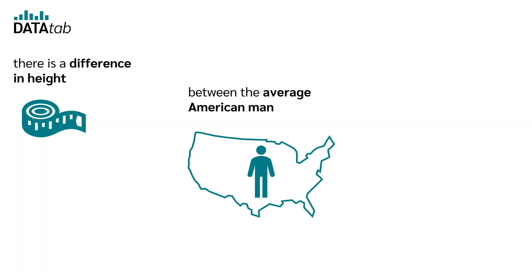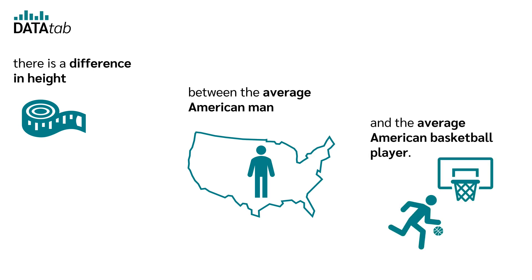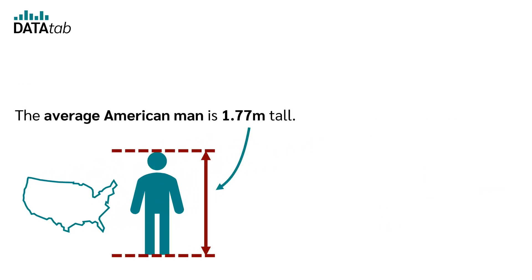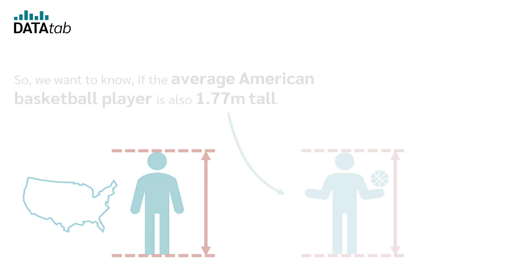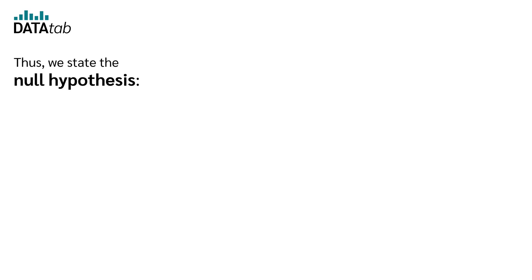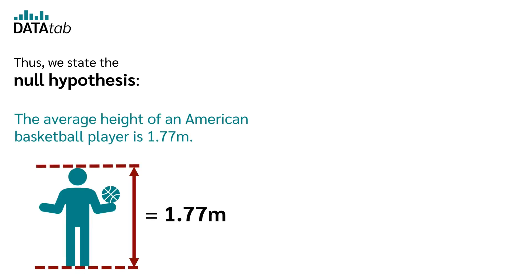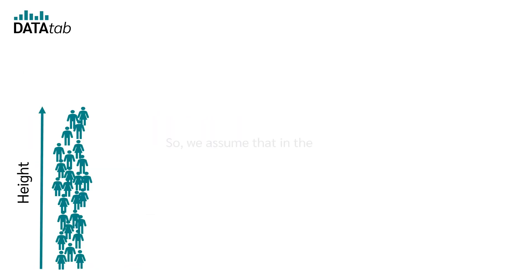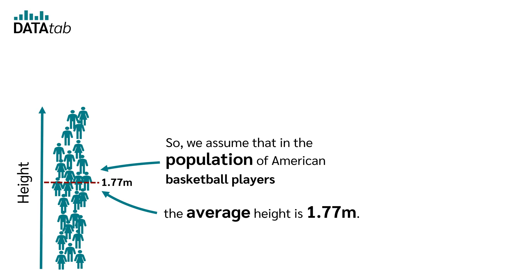We would like to investigate whether there is a difference in height between the average American man and the average American basketball player. The average American man is 1.77 meters tall. So we want to know if the average American basketball player is also 1.77 meters tall. Thus we state the null hypothesis: the average height of an American basketball player is 1.77 meters. So we assume that in the population of American basketball players the average height is 1.77 meters.